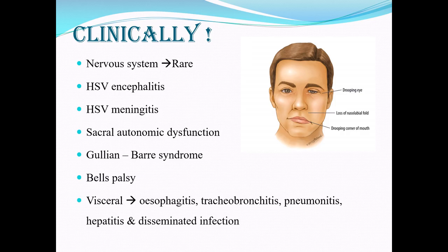Nervous system involvement is rare but known to happen. Examples include herpes simplex virus encephalitis, herpes simplex meningitis, sacral autonomic dysfunction, Guillain-Barré syndrome, and Bell's palsy. Other organs can also be infected, leading to esophagitis, tracheobronchitis, pneumonitis, hepatitis, and disseminated infection.